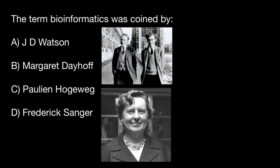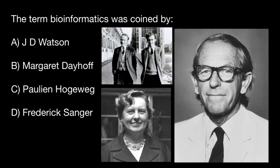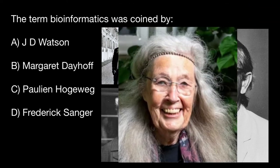Let's talk about Frederick Sanger — here's his portrait. He was a British biochemist who twice won the Nobel Prize in Chemistry, one of only two people to have done this twice in the same category, the first person overall with two Nobel Prizes, and the third person overall with two Nobel Prizes in the sciences. He was the first person to sequence a protein — it was insulin — and he developed a technique to sequence RNA and DNA. But Frederick Sanger did not coin the term bioinformatics.